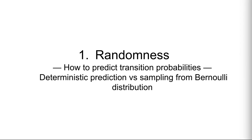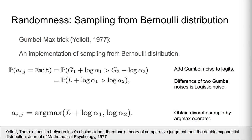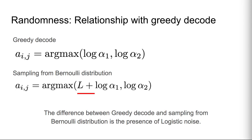The first aspect is randomness. Randomness may be effective for alignment prediction because of the non-deterministic nature of speech. We describe the relationship between greedy decoding and sampling from a Bernoulli distribution by implementing sampling using the Gumbel-Max trick. According to the Gumbel-Max trick, sampling from a Bernoulli distribution can be implemented by adding Gumbel noises to two logits followed by argmax, which is equivalent to adding logistic noise to one logit and applying argmax. Therefore, the difference between greedy decoding and Bernoulli sampling is the presence of logistic noise, which we investigate in our experiment.